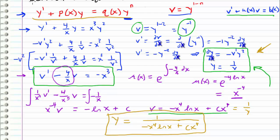So that is Bernoulli's equation. We used a change of variables to turn a non-linear equation into a linear one, solved it with methods we already know, and converted back. I think it's called Bernoulli's equation because it shows up in fluid dynamics — if you're familiar with that, you've probably seen this form. Anyway, thanks for watching, and I'll see you guys later.